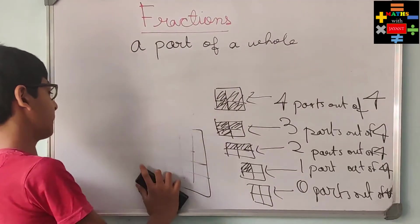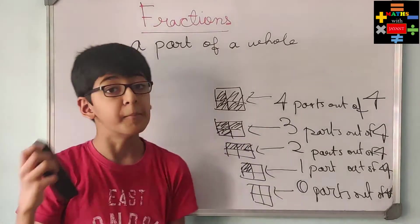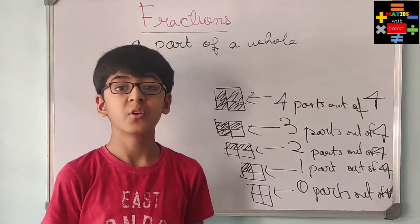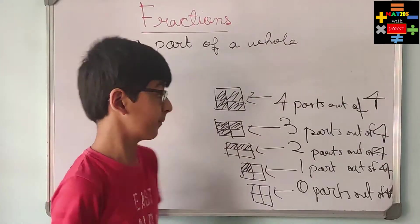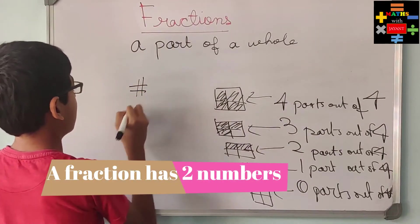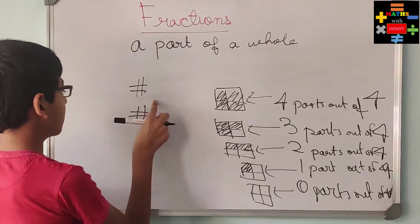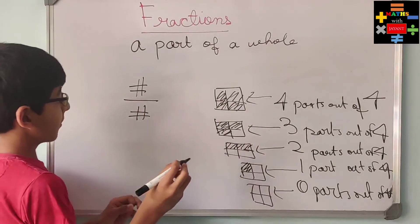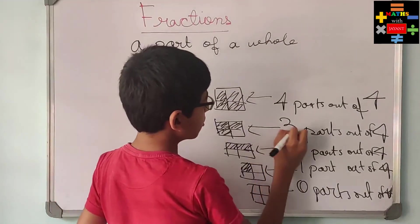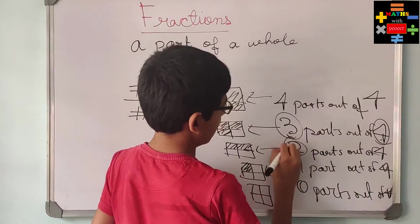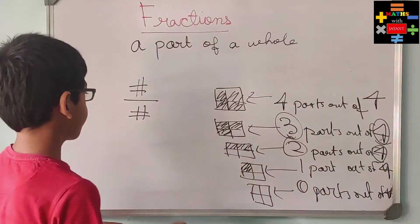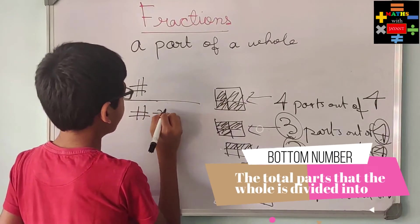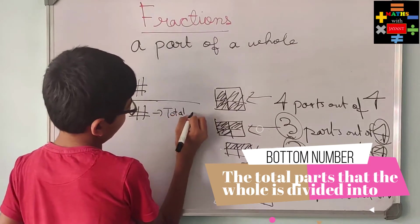So now you might be wondering if there is a mathematical way of writing a fraction. Yes, there is, and now let us find out what that is. Always know that the fraction requires two numbers and a line in the middle. The top number represents how many parts of the total something is divided into, and the bottom number represents how many parts are shown — how many parts we have.